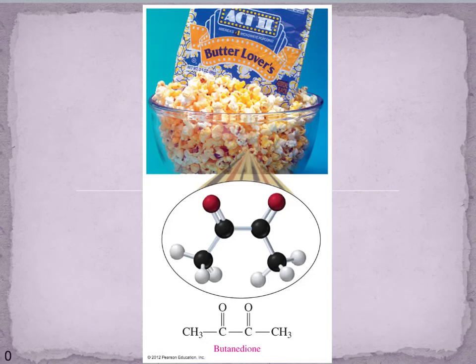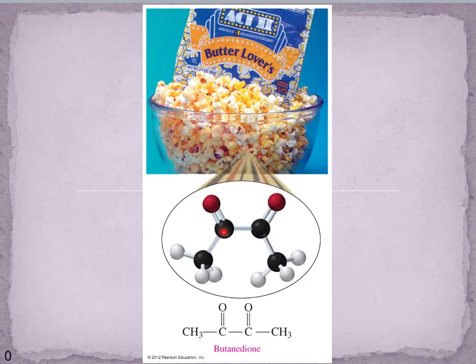That lovely buttery smell in popcorn comes from butanedione. This is a unique molecule because it has two ketones, which is why we have 'di' in front of the '-one.' The '-one' ending indicates a ketone in the molecule; 'di' tells us there are two of them; and 'but-' tells us we have a four-carbon chain. That's where the buttery scent in popcorn comes from.